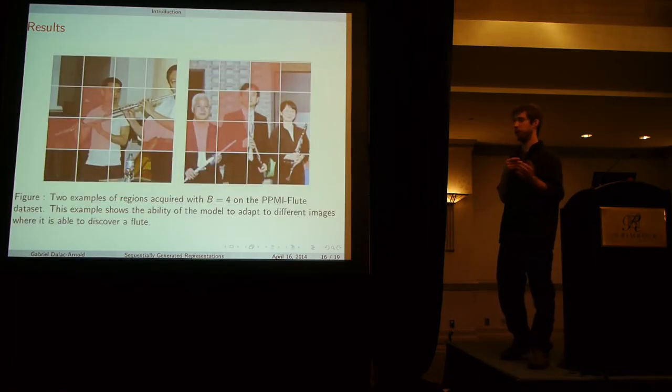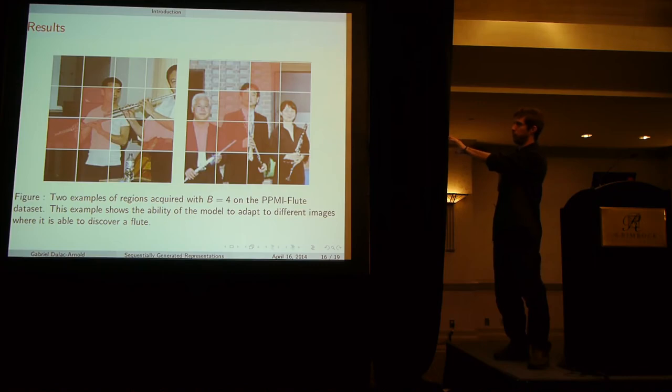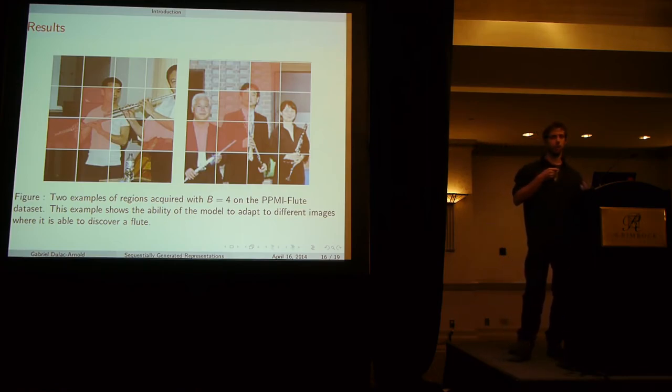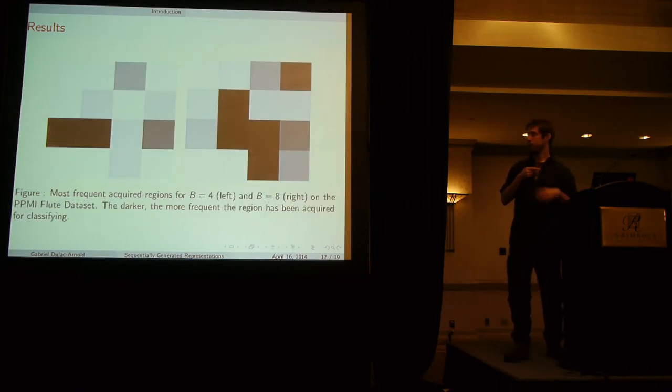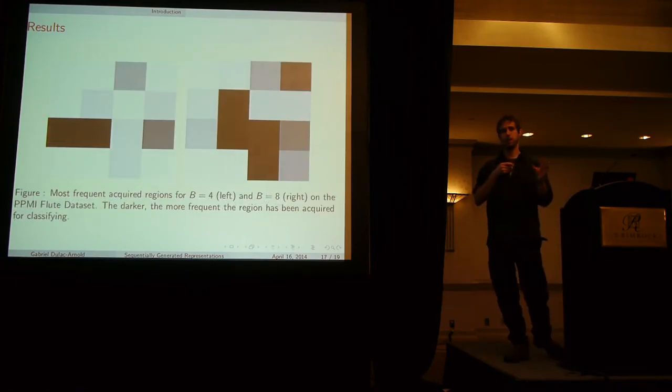Here's an example of regions acquired with a budget of four on the flute dataset, trying to see if somebody is playing or not. You can see that we're always kind of looking at the same region in the bottom left. And there's this fourth region that kind of is different based on the image. You can't always interpret what it's doing.